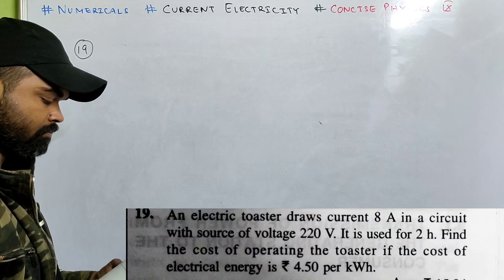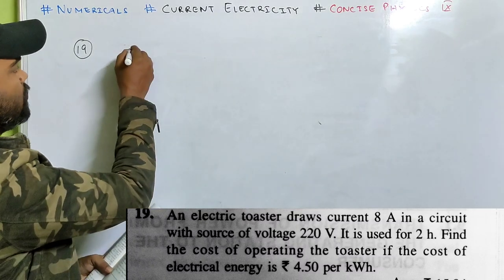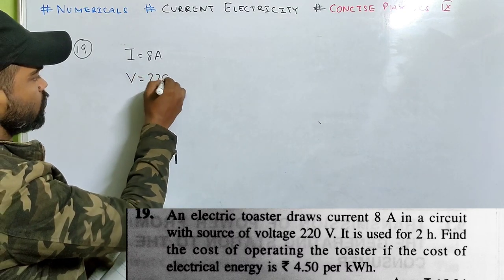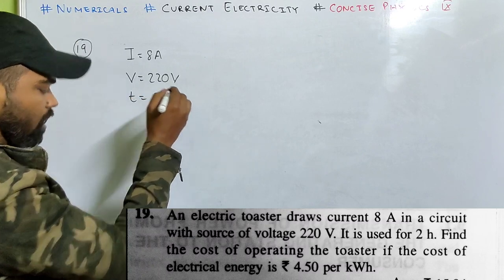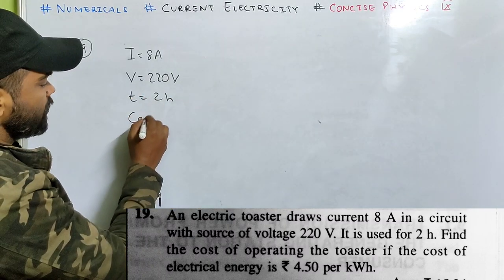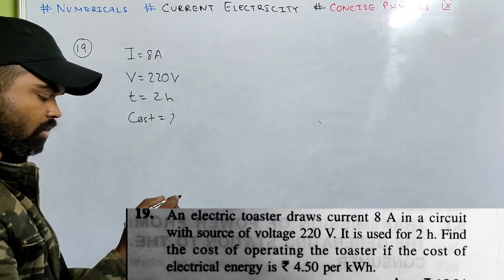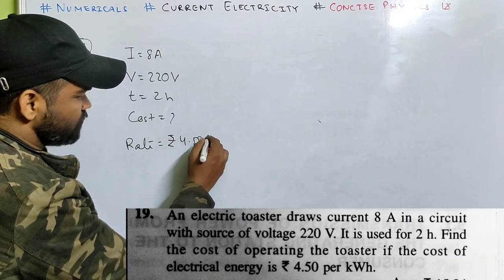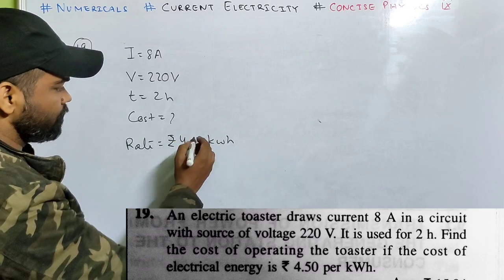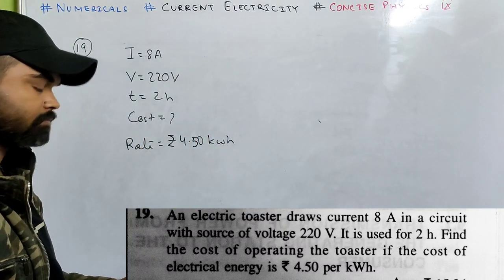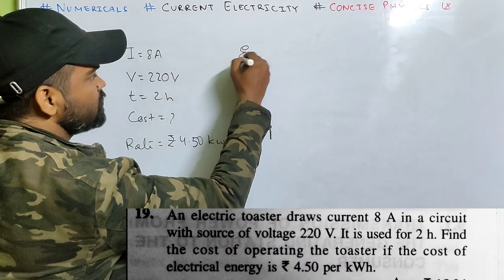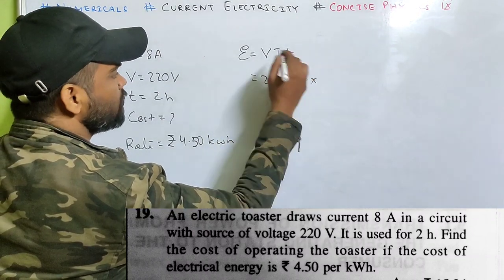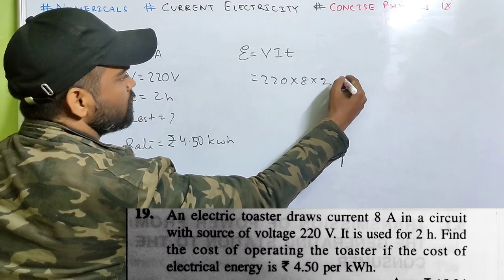Let's look at number 19. An electric toaster draws a current of 8 ampere when the voltage is 220 volt. It's used for 2 hours. Find the cost of operating the toaster. The rate at which energy is charged is rupees 4.50 per kilowatt hour. Energy is V I T, so energy will be 220 into 8 into 2 hours.